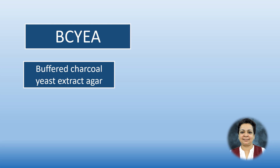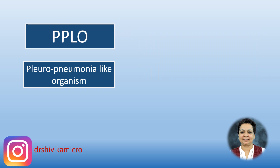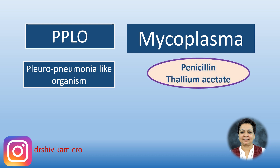Buffered Charcoal Yeast Extract agar is the selective medium for Legionella pneumophila — a very important medium. PPLO agar and PPLO broth are used for growing mycoplasmas. Since mycoplasmas lack a cell wall, penicillin is used as a selective agent to inhibit unwanted bacteria, along with thallium acetate. So remember: penicillin and thallium acetate are the selective agents in PPLO medium.